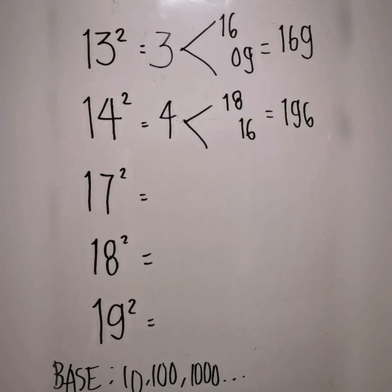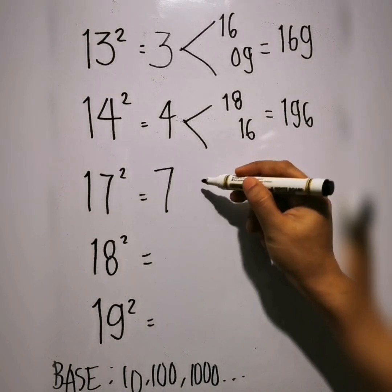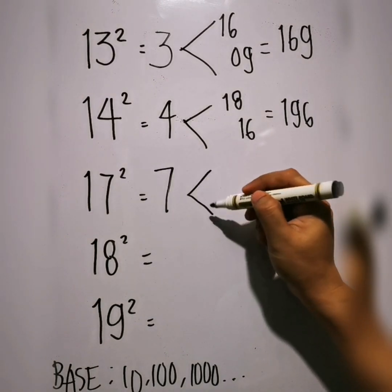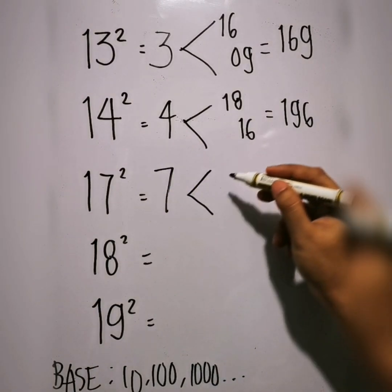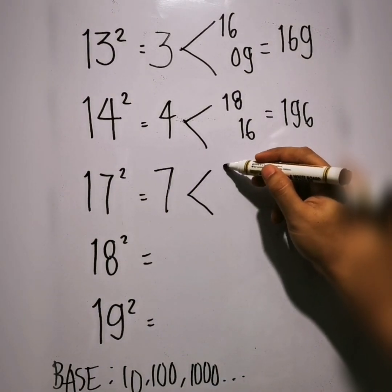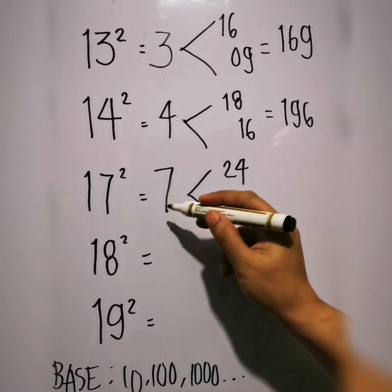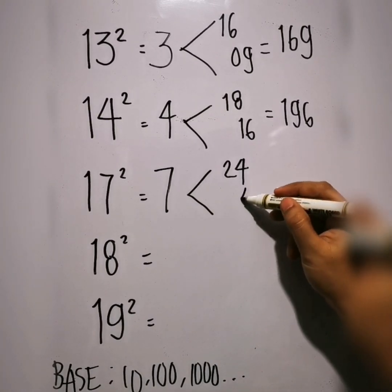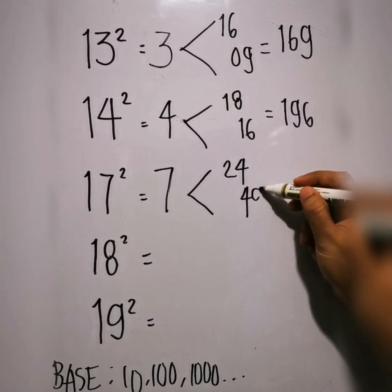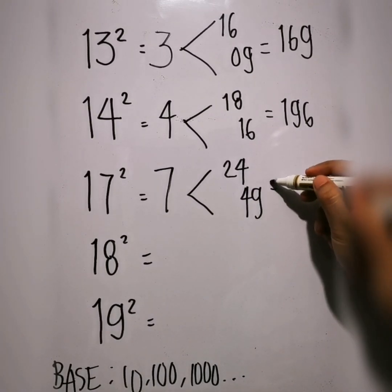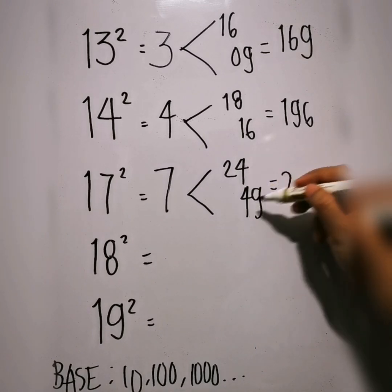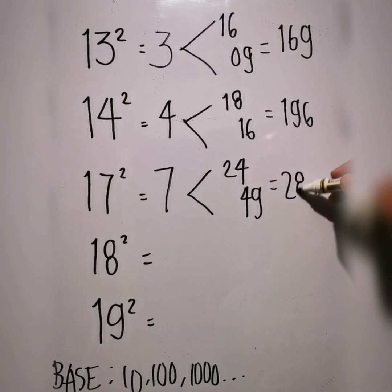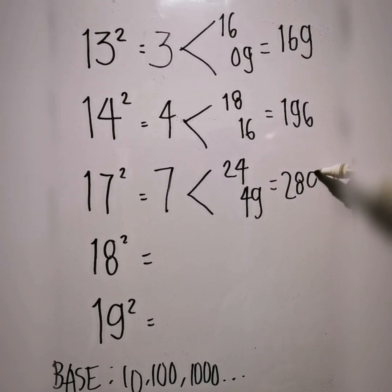Next example, 17 squared. 17 minus 10 is 7. 17 plus 7 is 24. 7 squared is 49. So the answer is 2, then 4 plus 4 is 8, then 9: 289.